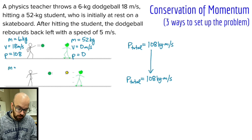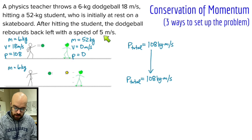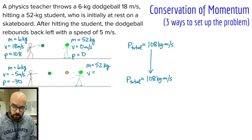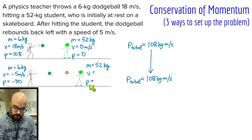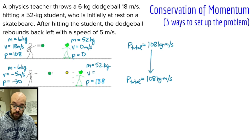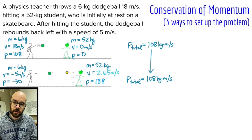The mass of the ball is still six kilograms and it's rebounding back to the left at five meters per second, so the velocity is negative five meters per second. Multiplying those gives a momentum of negative 30. The mass of the student afterward is still 52. I don't know the velocity yet, but I can calculate the student's momentum: the total is 108 and the ball's momentum is negative 30, so negative 30 plus what gives 108? It's 138 kilogram meters per second.